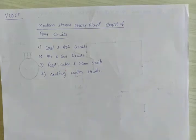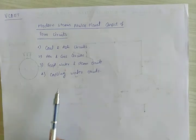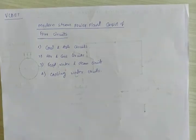This steam power plant — also called a modern thermal power plant — is categorized into four circuits: coal and ash, air and gas, feed water and steam, and finally the cooling water circuit. Now we concentrate on the schematic representation, or the layout, of the steam power plant.